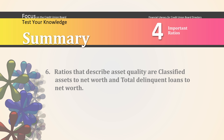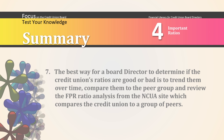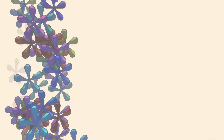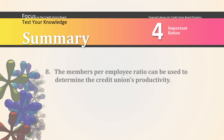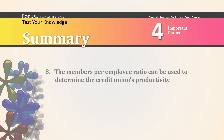Ratios that describe asset quality are classified assets to net worth and total delinquent loans to net worth. The best way for a board director to determine if the credit union's ratios are good or bad is to trend them over time, compare them to the peer group, and review the FPR ratio analysis from the NCUA site, which compares the credit union to a group of peers. The members per employee ratio can be used to determine the credit union's productivity.